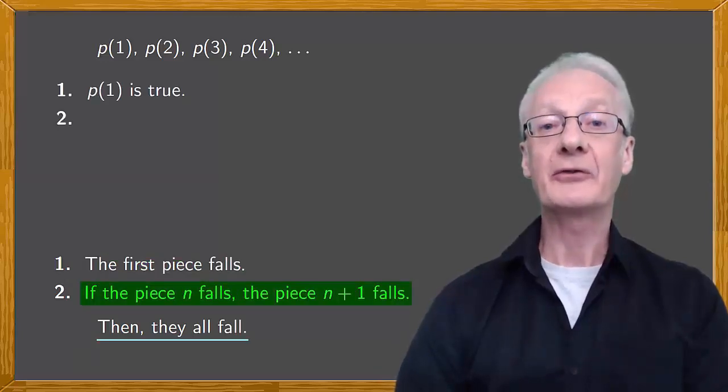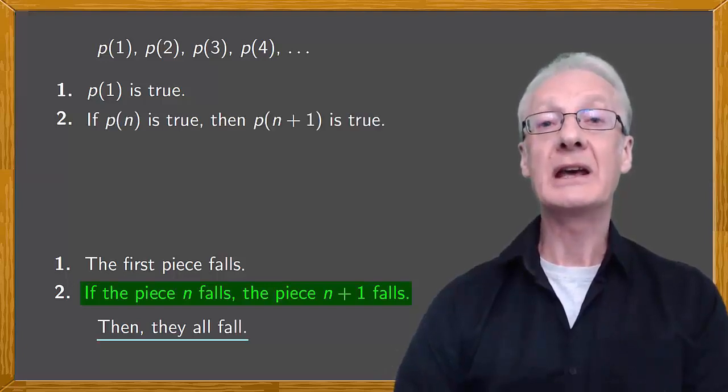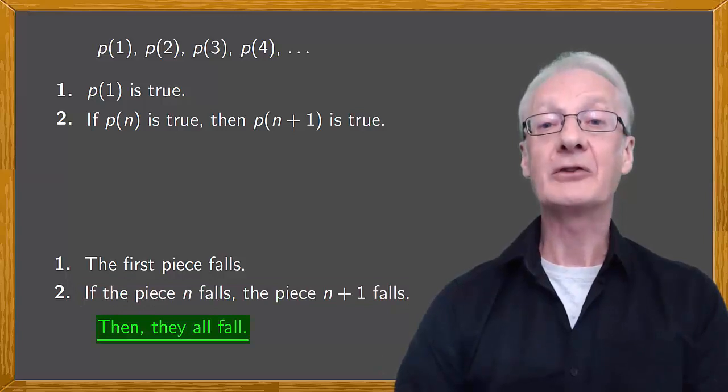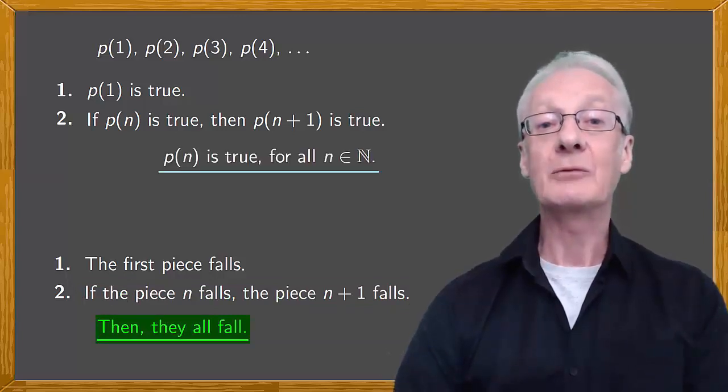If one falls, the next falls. In our case, if pn is true, then pn plus one is true. What does this mean? It means all the properties will fall. That is, pn will be true for every natural number n.